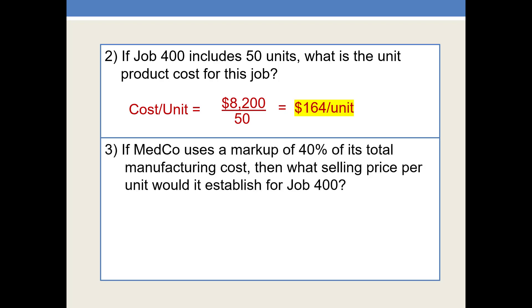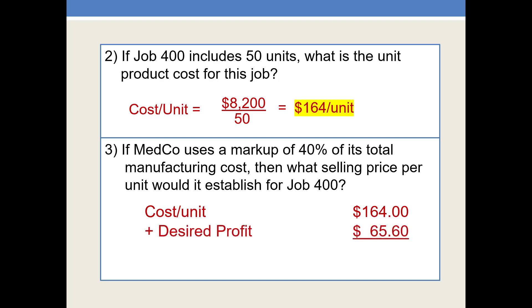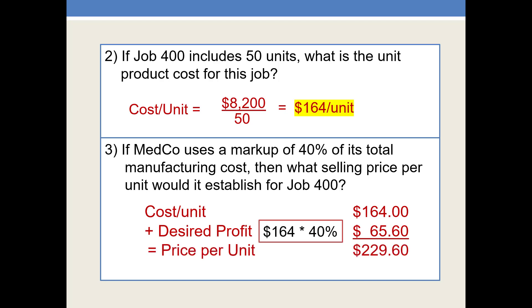In question 3, it says: if Medco uses a markup of 40% of its total manufacturing cost, then what selling price per unit would it establish for Job 400? You can see that the cost calculation is used in pricing decisions. We'll start with the cost, $164 per unit, we'll add 40% of that, which is $65.60, and this makes our price per unit $229.60.